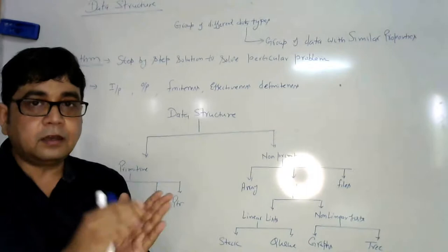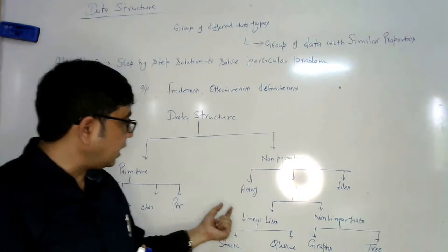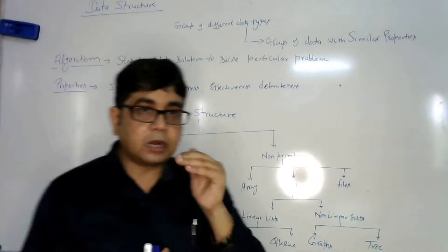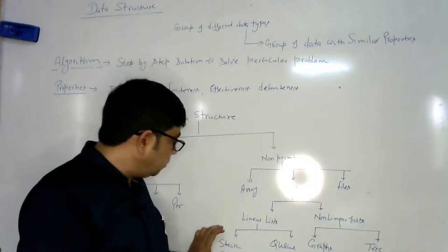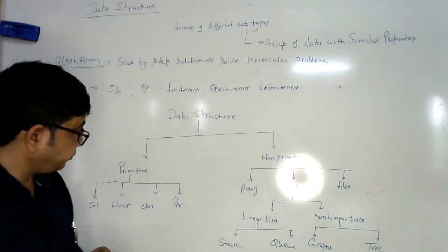And list can again be classified as linear and non-linear data structure. Linear data structure means we are having stack and queue. And non-linear data structure are graph and tree. And in this course, we are going to study all these data structures one by one.